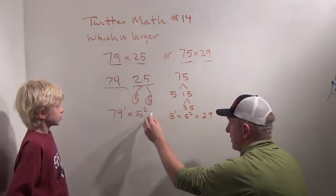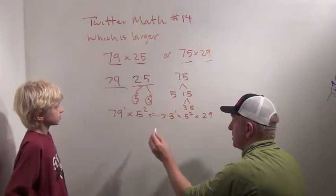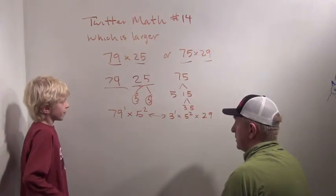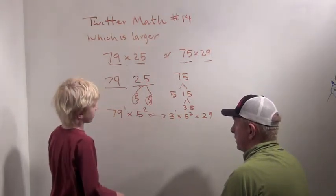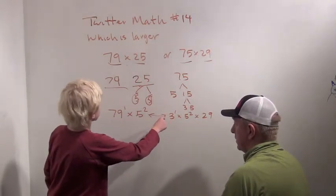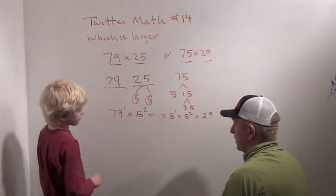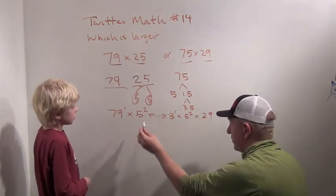So 75 times 29 is 3 to the 1 times 5 squared times 29. So this is what we're trying to compare. Which one of these is larger? Well, the 5 squared's the same. But this doesn't have a 3. Right. It doesn't have a 3. The 5 squareds are the same, right?